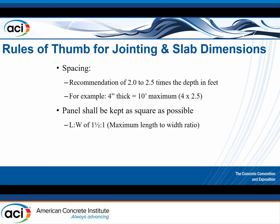Horizontal spacing is very important. The recommendation is between two and two-and-a-half times the thickness of your pavement in feet. If you've got a four-inch thick pavement, two-and-a-half times four is a 10-foot maximum. It's beneficial to pull back from those maximums — for example, if a manhole location shifts slightly in the field, pulling back from the maximum allows for adjustments.